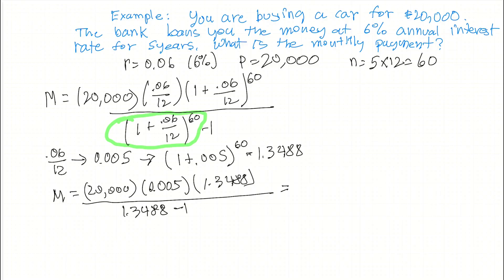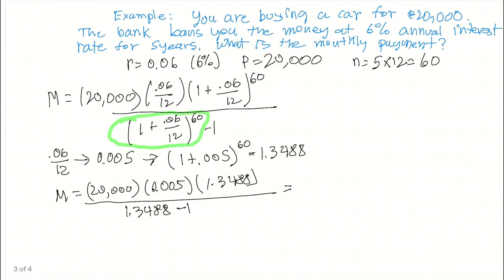So that's going to give us, doing the numerator first, we're going to get 134.88. Divide that by 0.3488, because we have that number minus 1, so that's going to equal that number. So what this gives us, when we do the final math, we're going to get a loan payment of $386.70 per month.